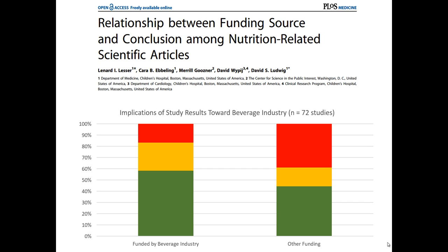What they did was find 72 published scientific studies about the nutritional value of beverages, then split those 72 studies into two groups. First, they categorized studies that were funded by the beverage industry. The other group included studies that used other funding sources such as academic grants. They then analyzed the results and characterized them as favorable to the beverage industry, neutral, or unfavorable to the beverage industry.